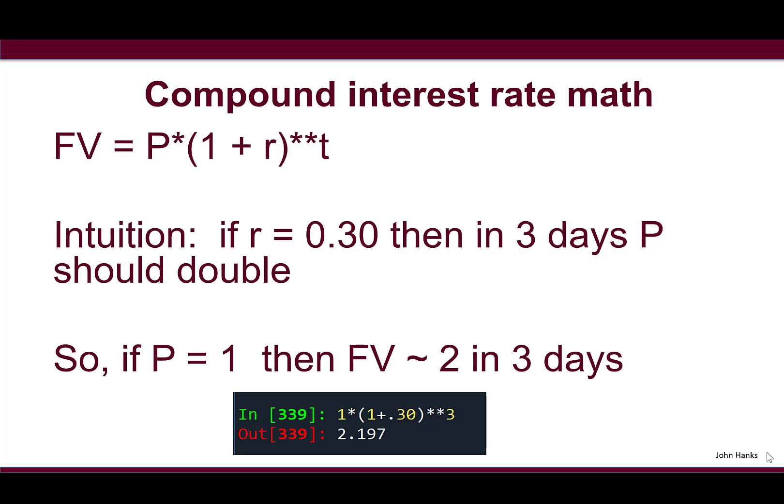How do we think about this intuitively? If we have a very high infection rate of 30 percent (0.30) and start with P = 1, then in one day we get 1.30. In two days, 1.3 × 1.3 = 1.69. In three days, we'd roughly get about 2.2.